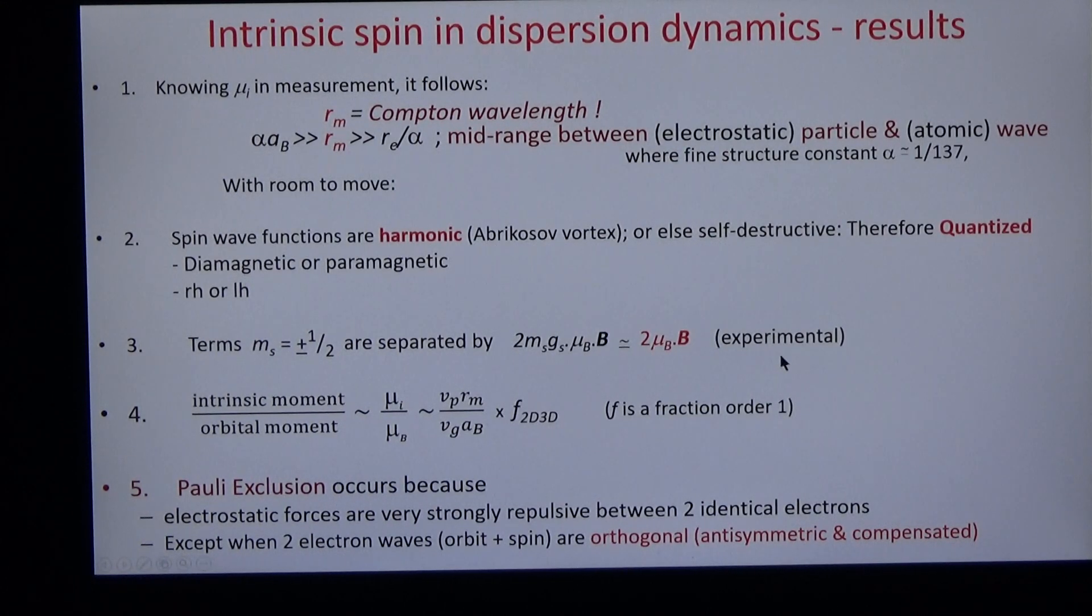The ratio of the intrinsic moment to the orbital moment is the phase velocity times the magnetic radius divided by the group velocity times the Bohr radius. We can also deduce that Pauli exclusion occurs because electrostatic forces are very strongly repulsive between two identical electrons.